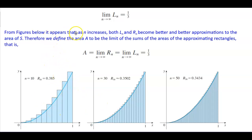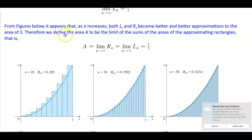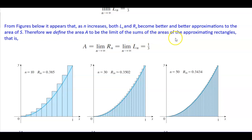From the figures below, it appears that as n increases — meaning the number of rectangles increases — both L subscript n and R subscript n become better and better approximations to the area of S. Therefore, we define the area A to be the limit of the sums of the areas of the approximating rectangles. That is, A equals the limit as n approaches infinity of R subscript n, which equals the limit as n approaches infinity of L subscript n, which equals 1/3.